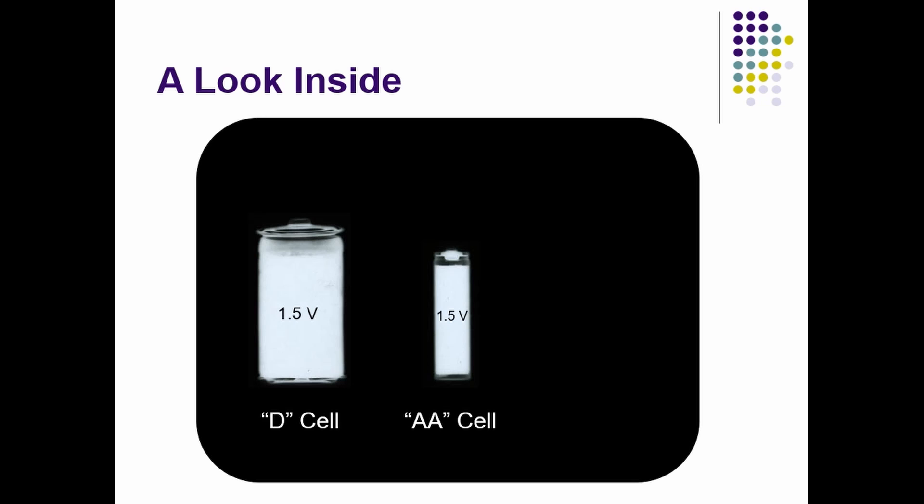All various dry cell batteries produce 1.5 volts per cell, despite their physical size. The larger the cell, the longer it will produce electricity, and the larger cells are used in devices that require more current over time, whereas the size and the weight is not important.